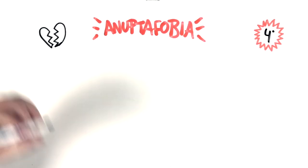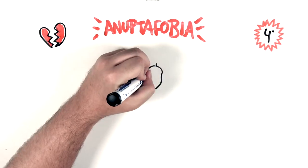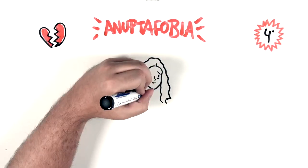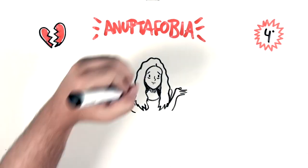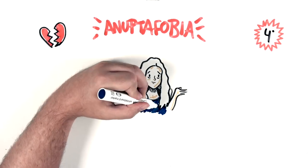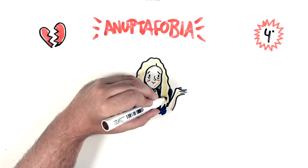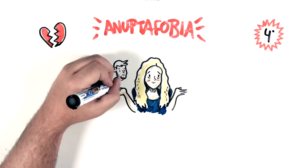Fourth place is for anuptaphobia. Those who suffer have a fear of being single. When they cut ties with their partners, they quickly look for a new one, and usually accept some infidelity situations, so as not to be alone. It is a phobia with a social disorder that holds a great feeling of dependence.